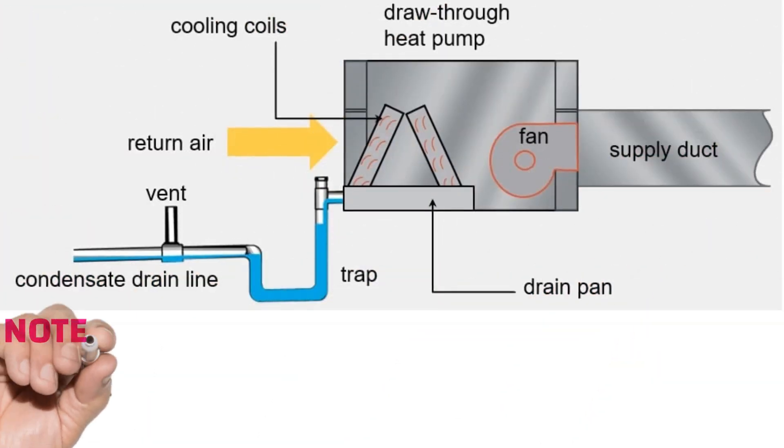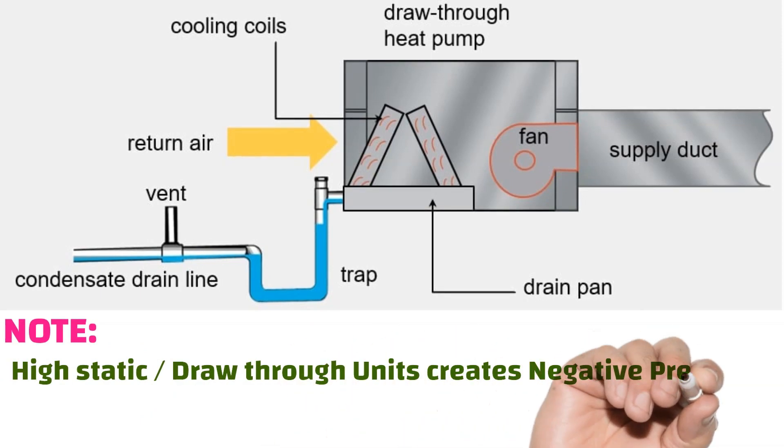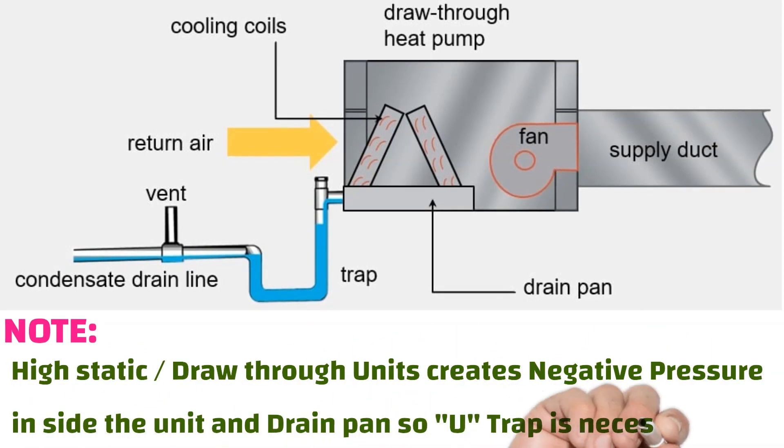High static and draw-through units create negative pressure inside the unit and drain pan. So a trap is necessary in the condensate drain pipe.